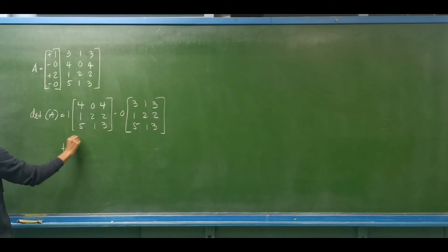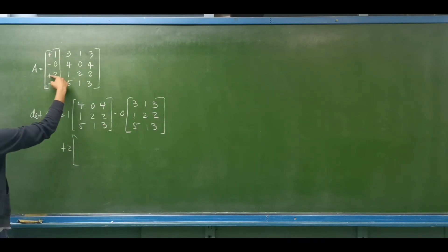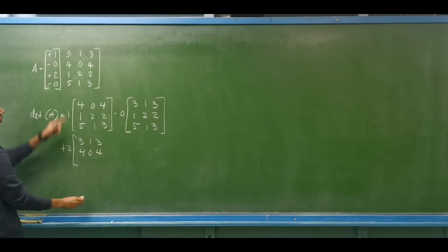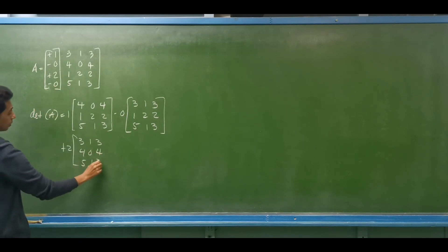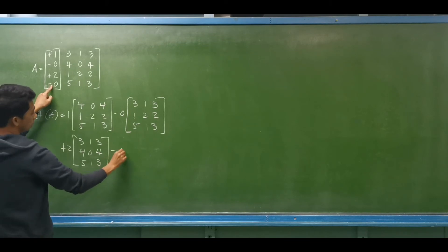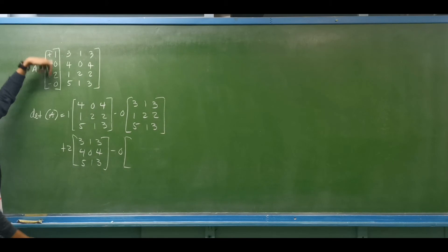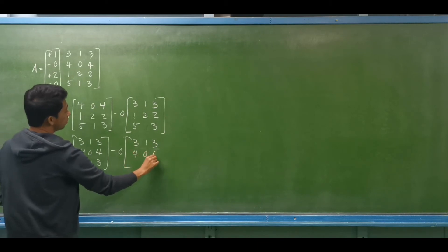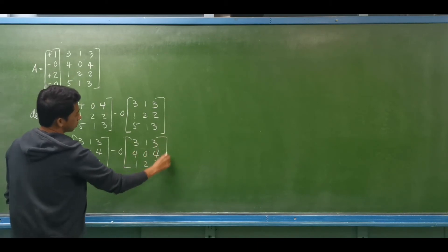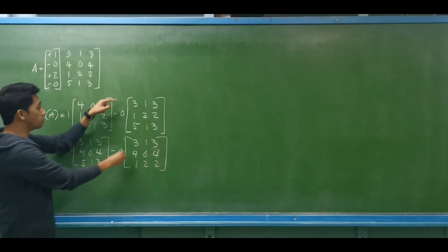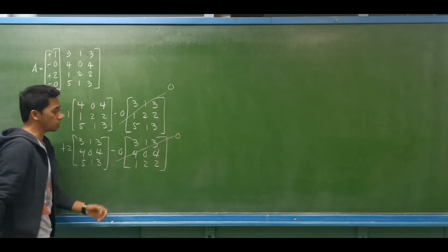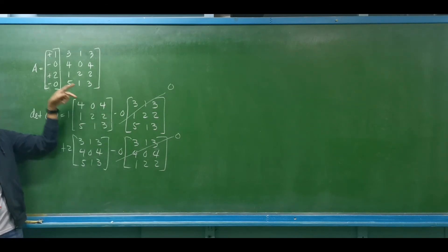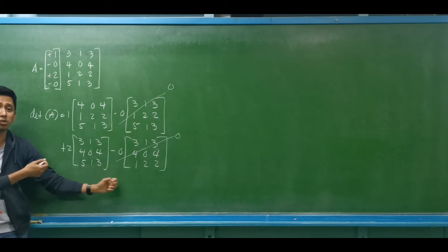Then plus 2 — the minor of 2, deleting first column and third row: 3, 1, 3, 4, 0, 4, 5, 1, 3. Then minus 0 — the remaining elements deleting first column and last row: 3, 1, 3, 4, 0, 4, 1, 2, 2. We can neglect terms with multiplier 0. A useful tip: choose a row or column containing zeros to minimize your work.